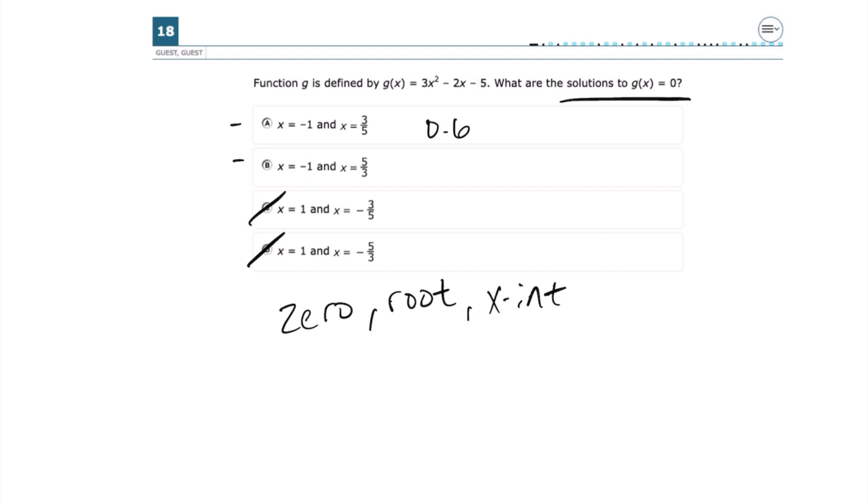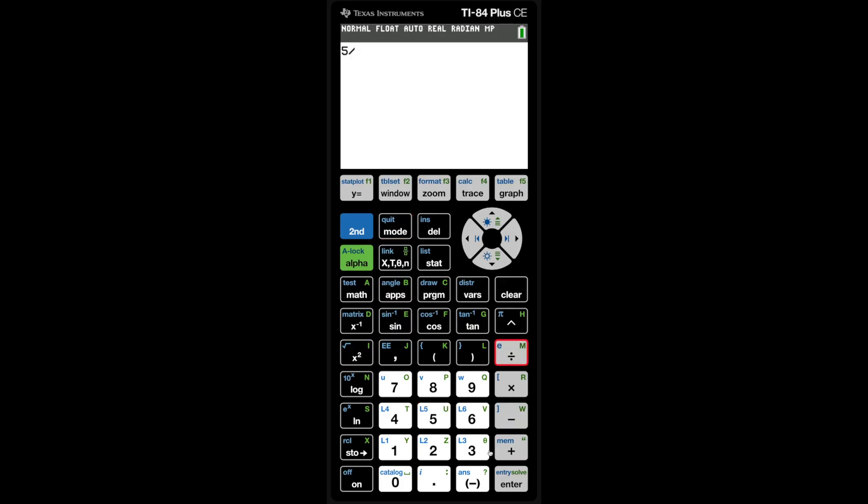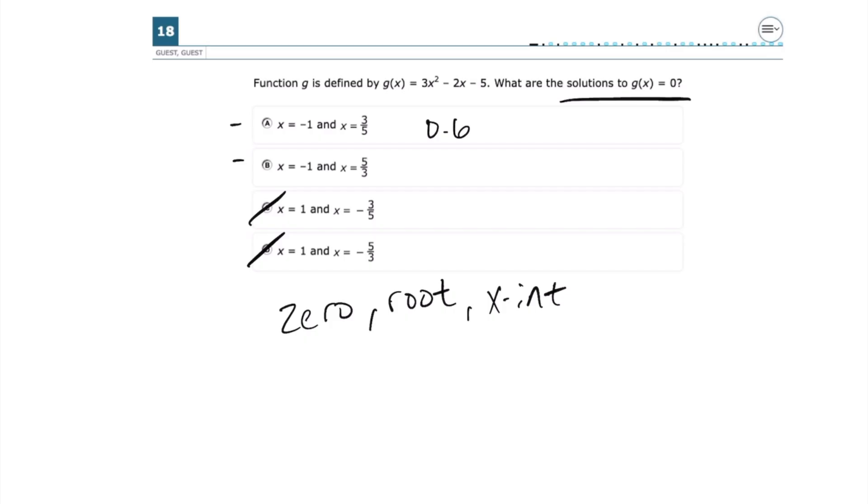And our x-intercept is definitely between 1 and 2. And then if we just want to double check, we can type in 5 divided by 3. And that's going to be 1.6 repeating. And so that does check out with the graph because that is closer to 2 than 1, but it is between 1 and 2. And so we're going to go with letter B.